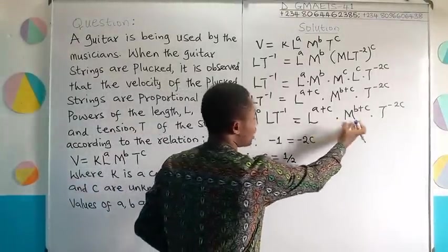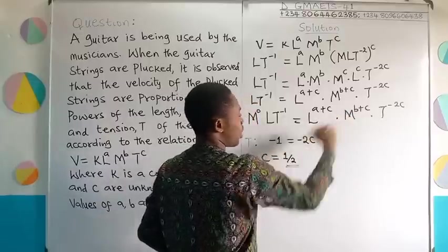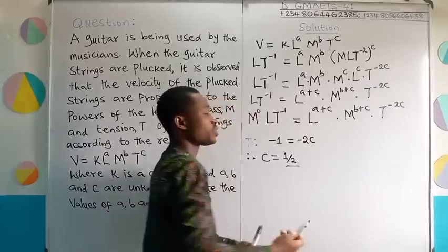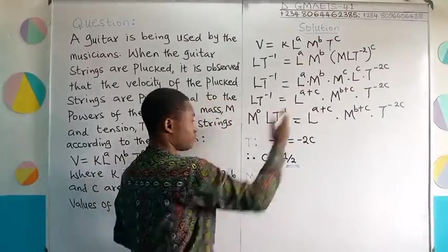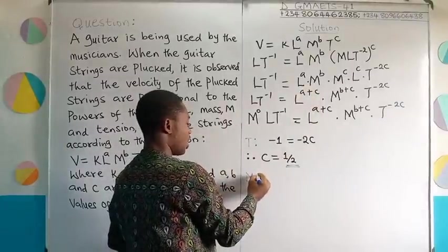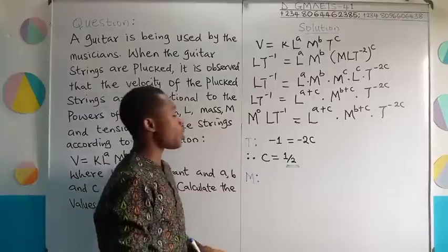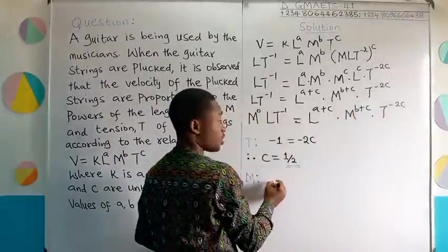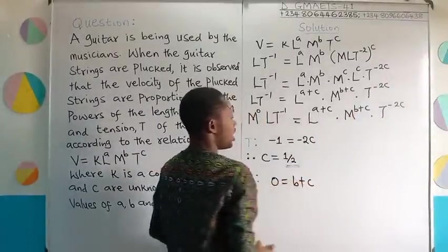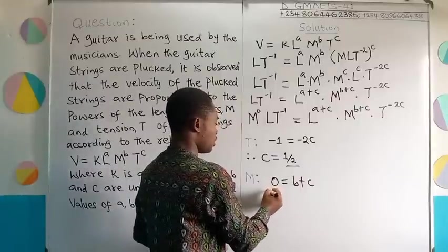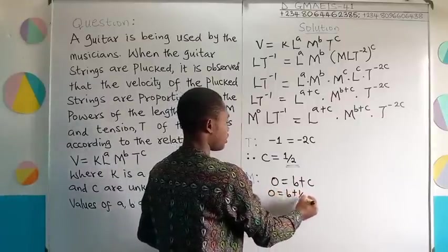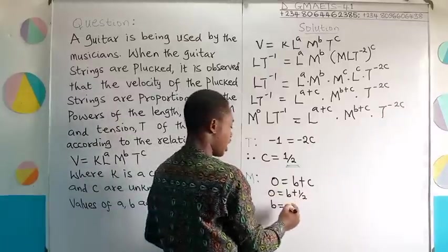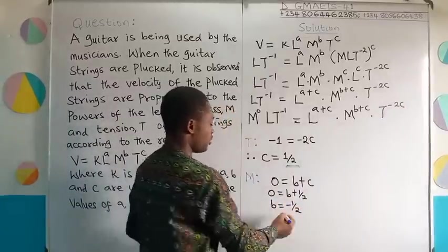I shall now move on to either M or L. At this point, I can pick any one of them because I know C now. Since I know C here, B is the unknown. I know C here, A is the unknown. So, I can pick any one of them. But let me just go in order. Taking from there, coming to the left. So, we are equating powers of M. If I am equating powers of M from the left, you have 0 on the right. You have B plus C. So, 0 is equal to B plus C. And then, we know the value of C already. So, this is going to give us 0 equal to B plus 1 half. Making B subject to the formula, I am going to move this half, 1 over 2, to the left-hand side. 0 minus half will give us minus half. And so, I have gotten the value of B.